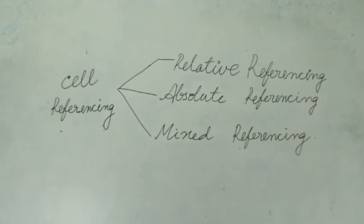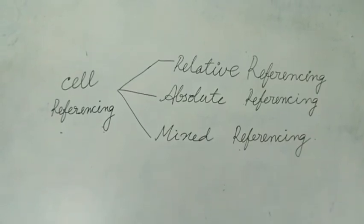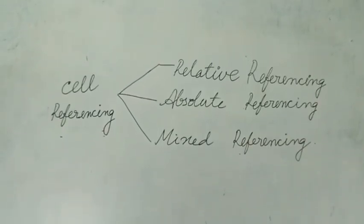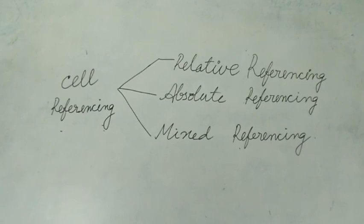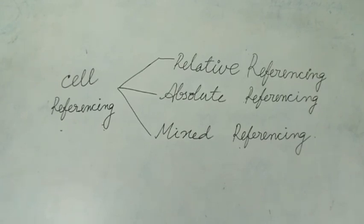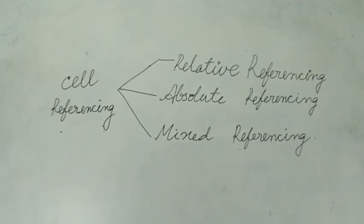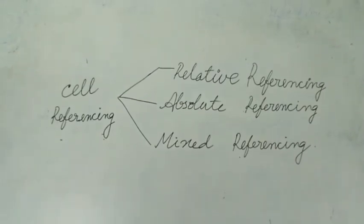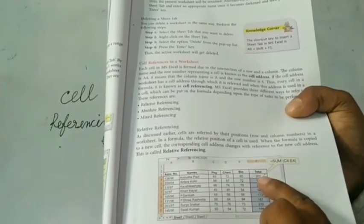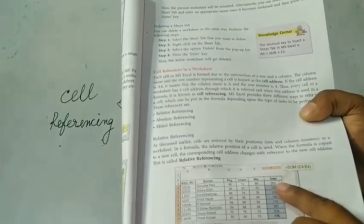In Relative Referencing, when the formula is copied to a new cell, the corresponding cell address changes with reference to the new cell address — this is known as Relative Referencing. It means suppose you write the formula of SUM in one cell, you drag it, and automatically you will get the answer in the next cells.